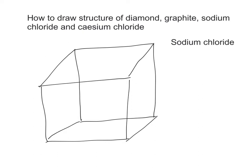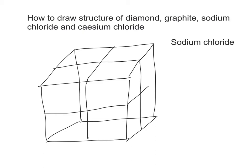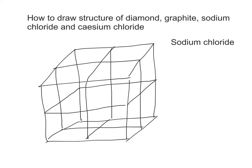Then we divide each face into four equal parts. There are altogether six faces, so we divide each face into four equal parts. Now we create two more faces here and again divide these two faces into four equal parts separately. Now we are ready to draw sodium ions and chloride ions onto this cube. Always place oppositely charged ions adjacent to each other.